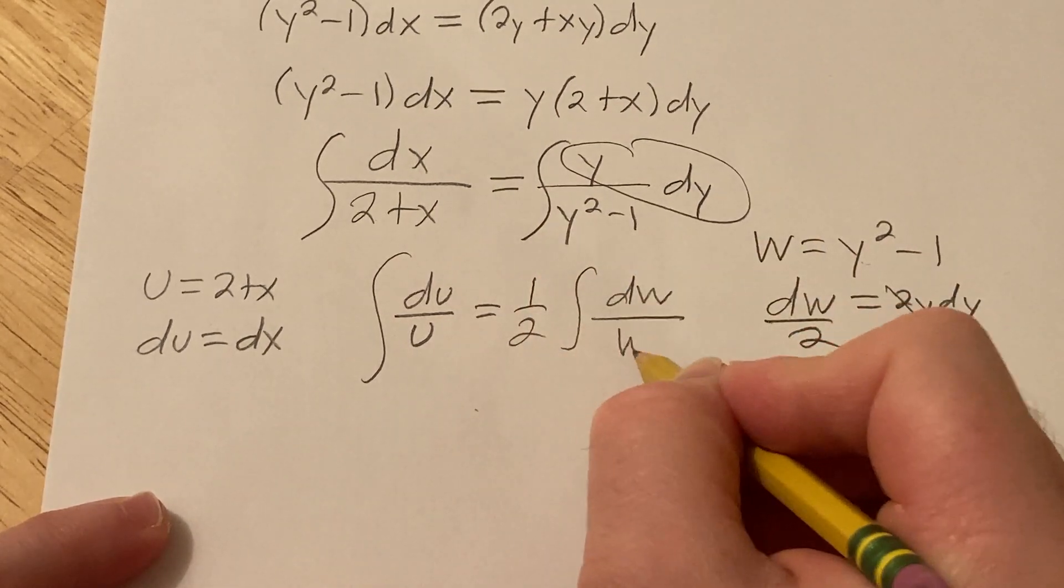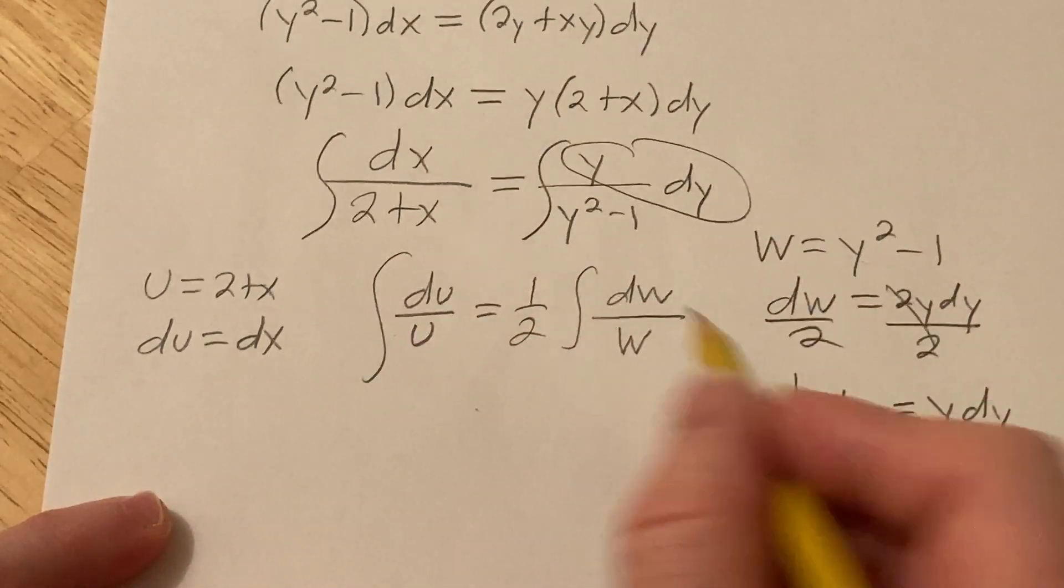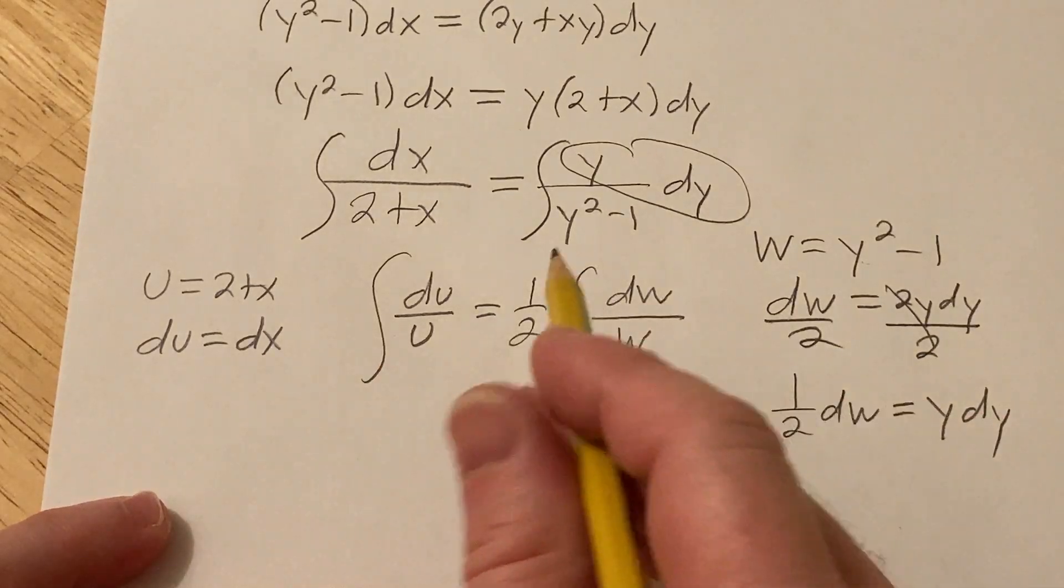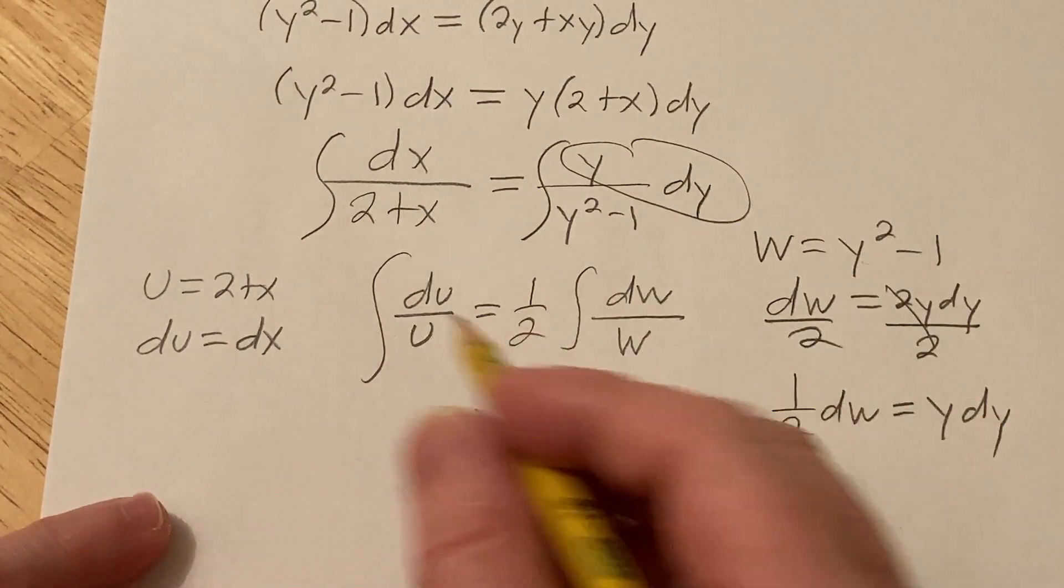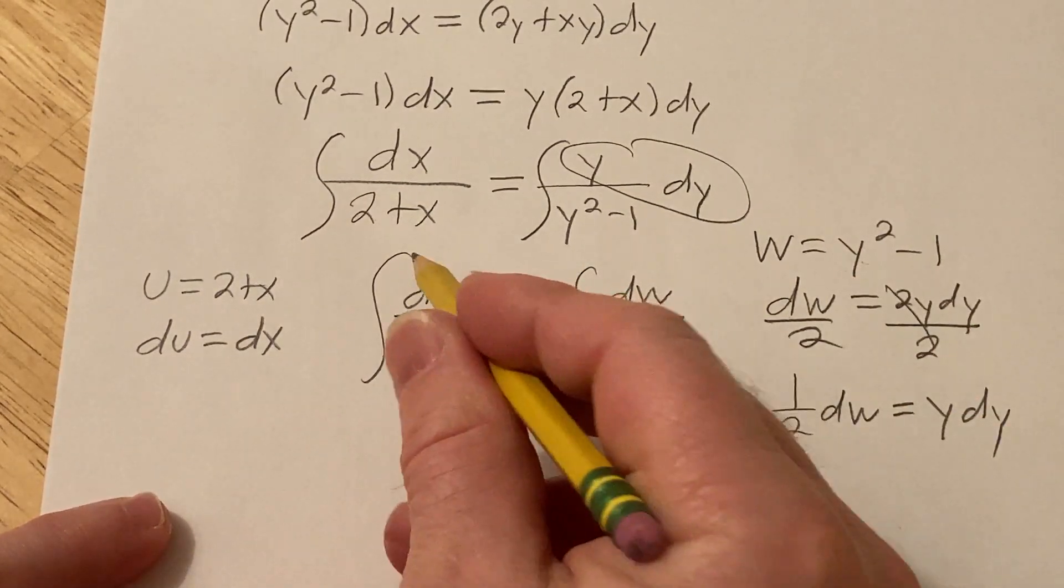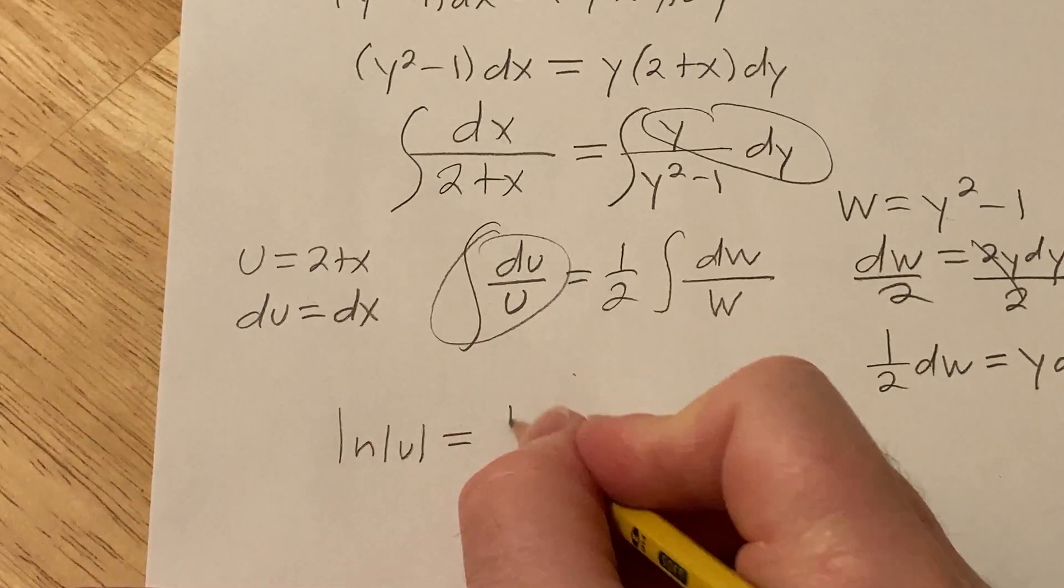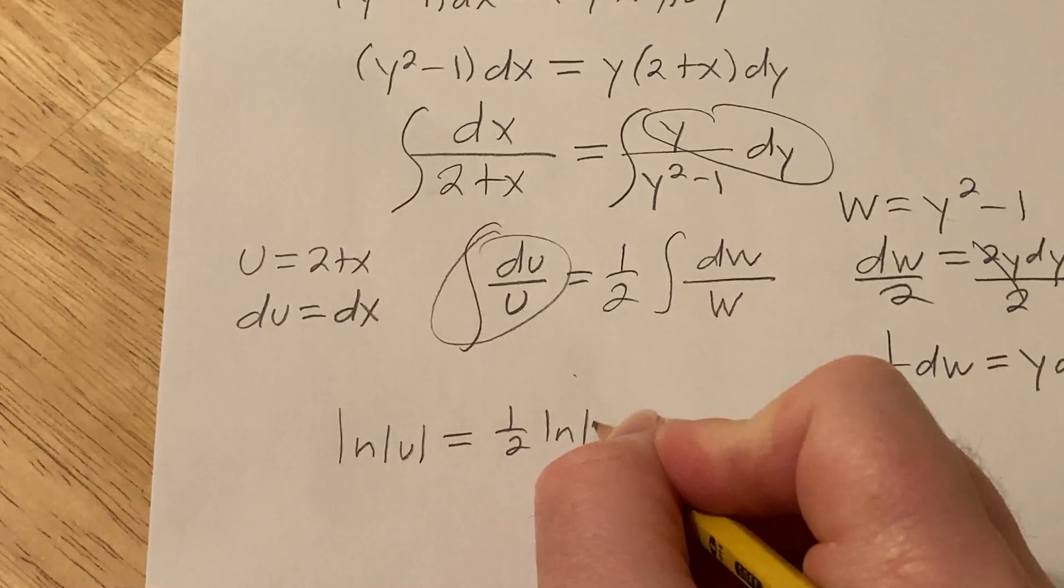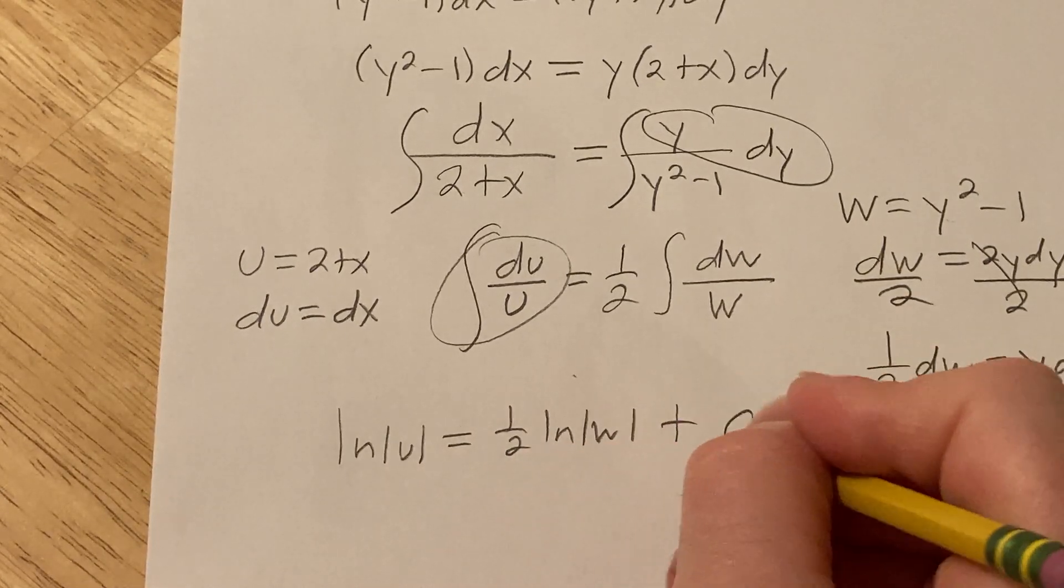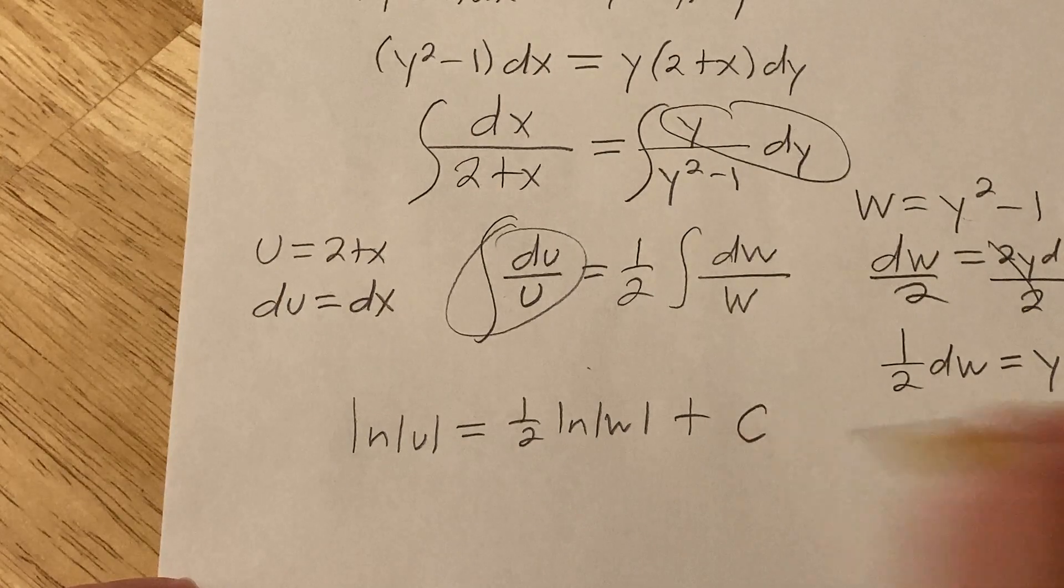And then here you have your w. I'm going a little bit fast, just working through this. I was just going to work out this problem. I thought, let me just go ahead and record it. So here, this is going to be a formula. This is the natural log of the absolute value of u. Same thing here, except it's the natural log of the absolute value of w. Plus our constant of integration, which I'll call capital C.